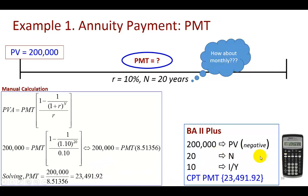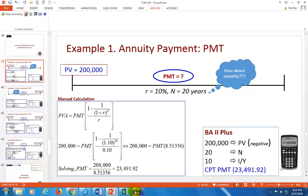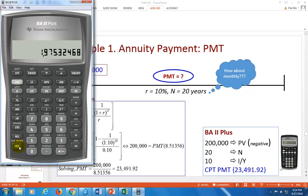But we can use the BA II Plus and make the entries as shown. So let's bring that up. First, we clear the screen and then the ritual: second clear TVM, second clear work.